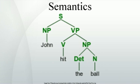Formal or truth conditional semantics, pioneered by the philosopher Donald Davidson, is another formalized theory which aims to associate each natural language sentence with a metalanguage description of the conditions under which it is true—e.g., 'snow is white' is true if and only if snow is white. The challenge is to arrive at the truth conditions for any sentence from fixed meanings assigned to individual words and fixed rules for how to combine them. In practice, truth conditional semantics is similar to model-theoretic semantics, but conceptually they differ in that truth conditional semantics seeks to connect language with statements about the real world, in the form of metalanguage statements, rather than with abstract models.